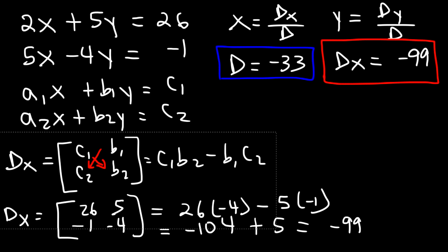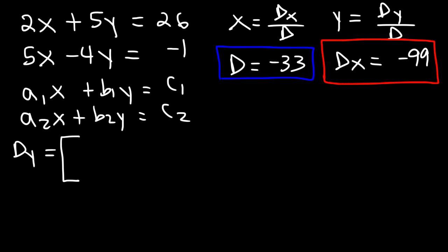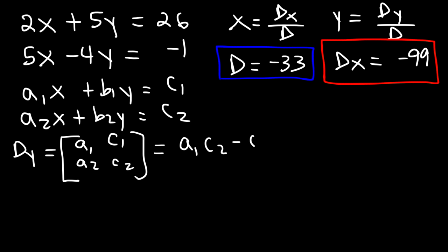Now let's calculate dy. For dy we take out the coefficients of y and replace them with c1 and c2. So the elements of dy are a1, a2, c1, and c2, and the determinant equals a1 times c2 minus c1 times a2.